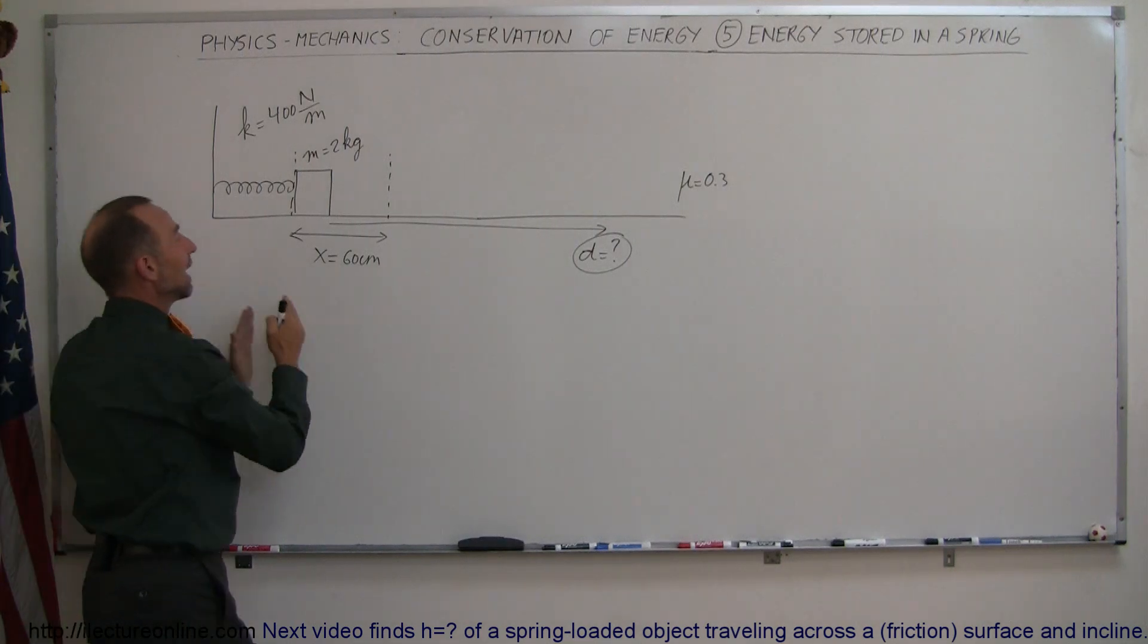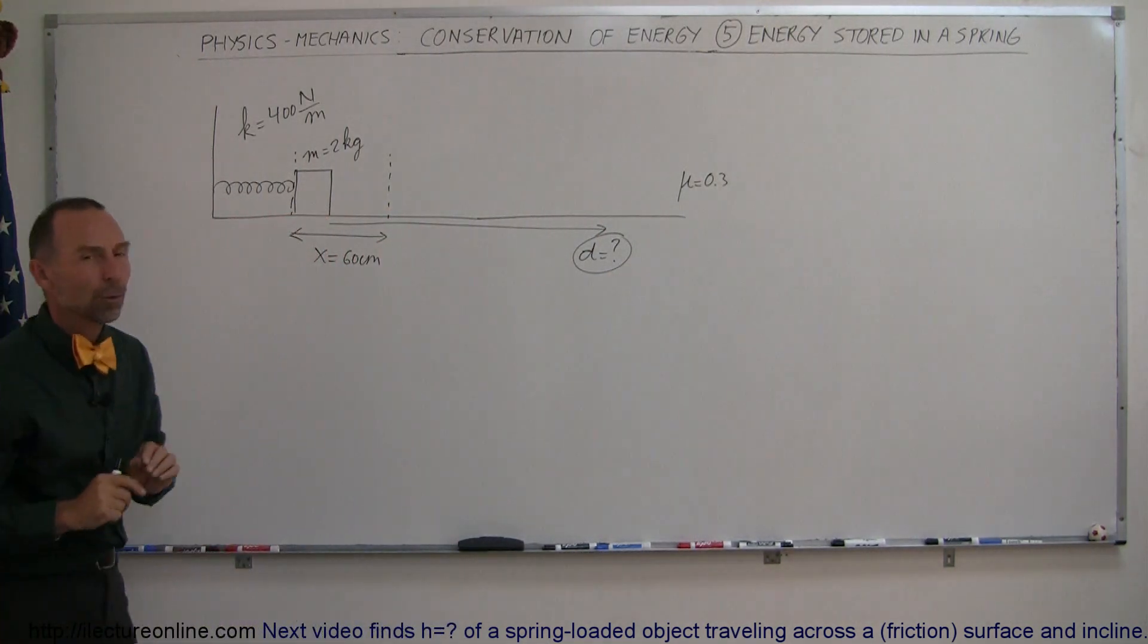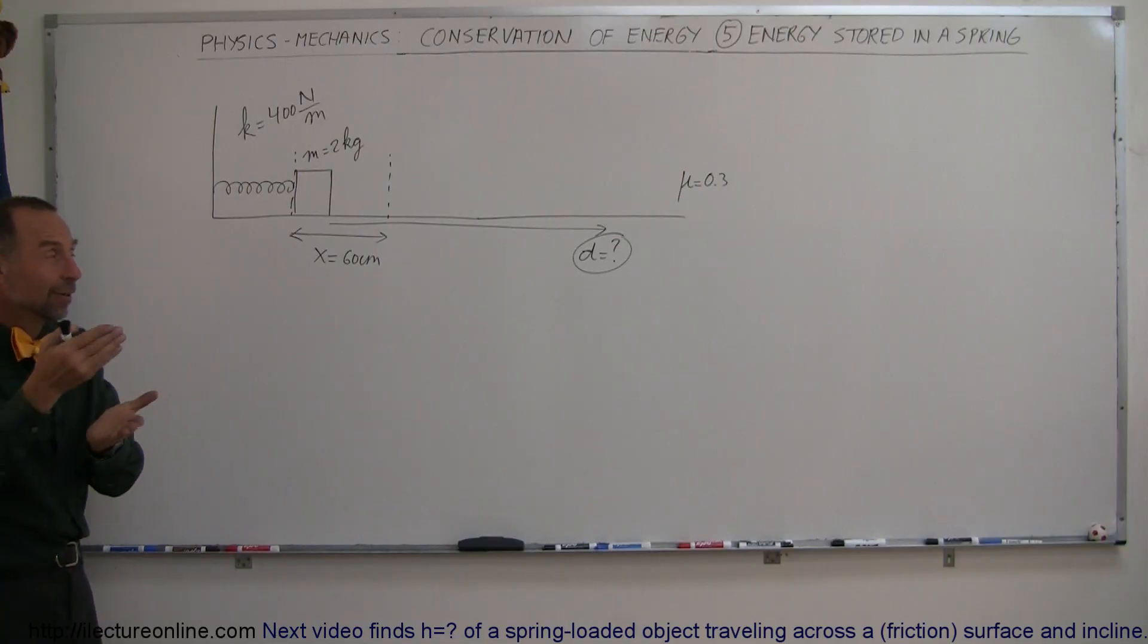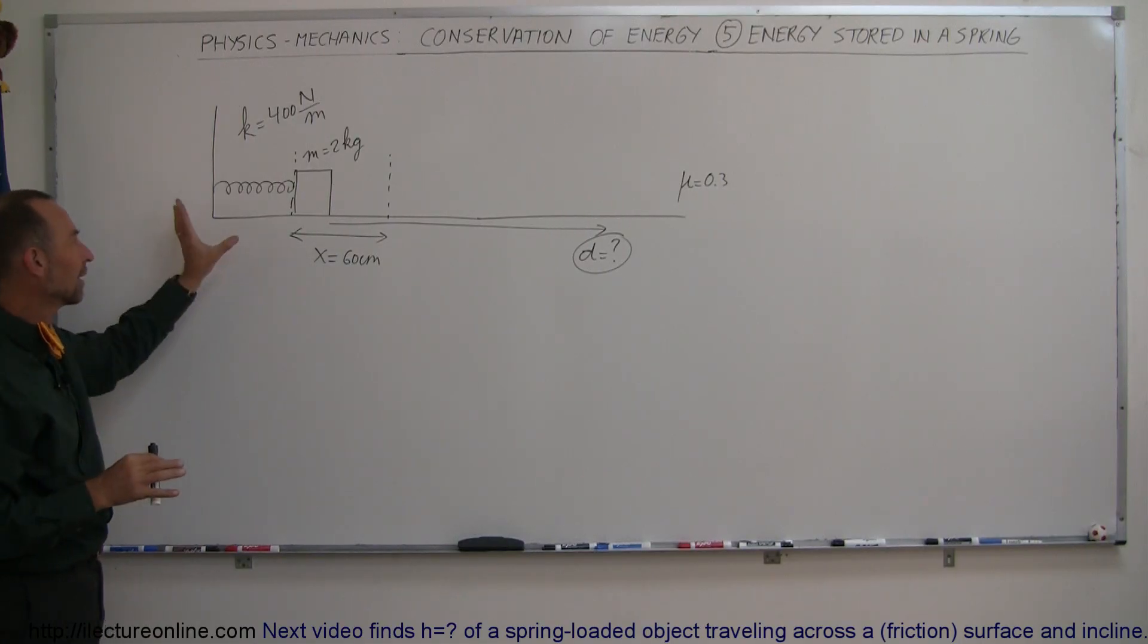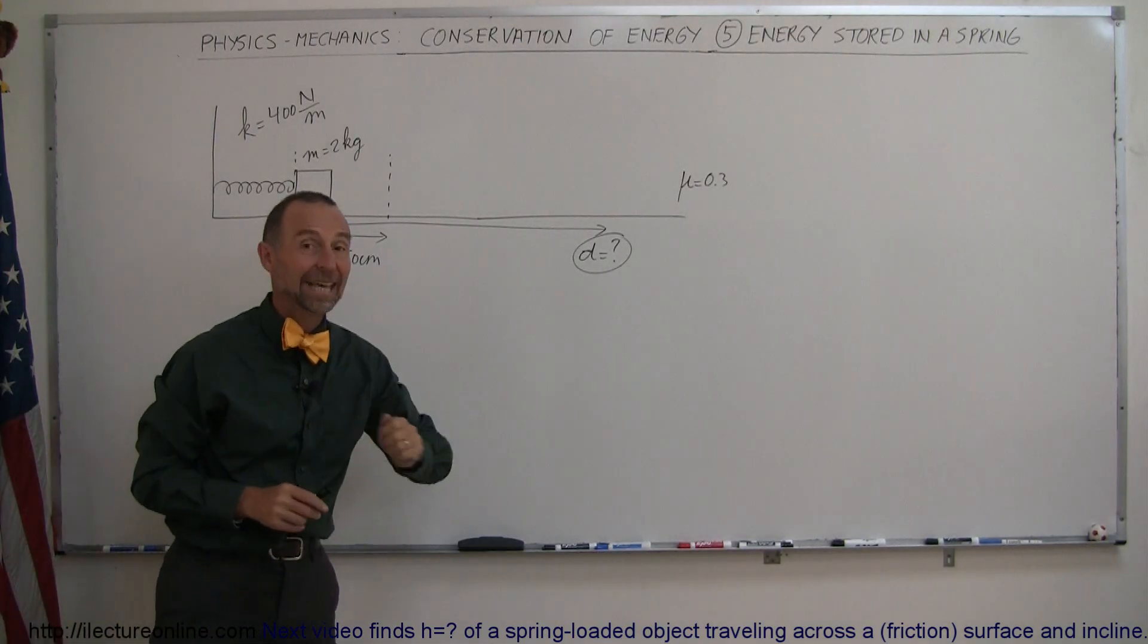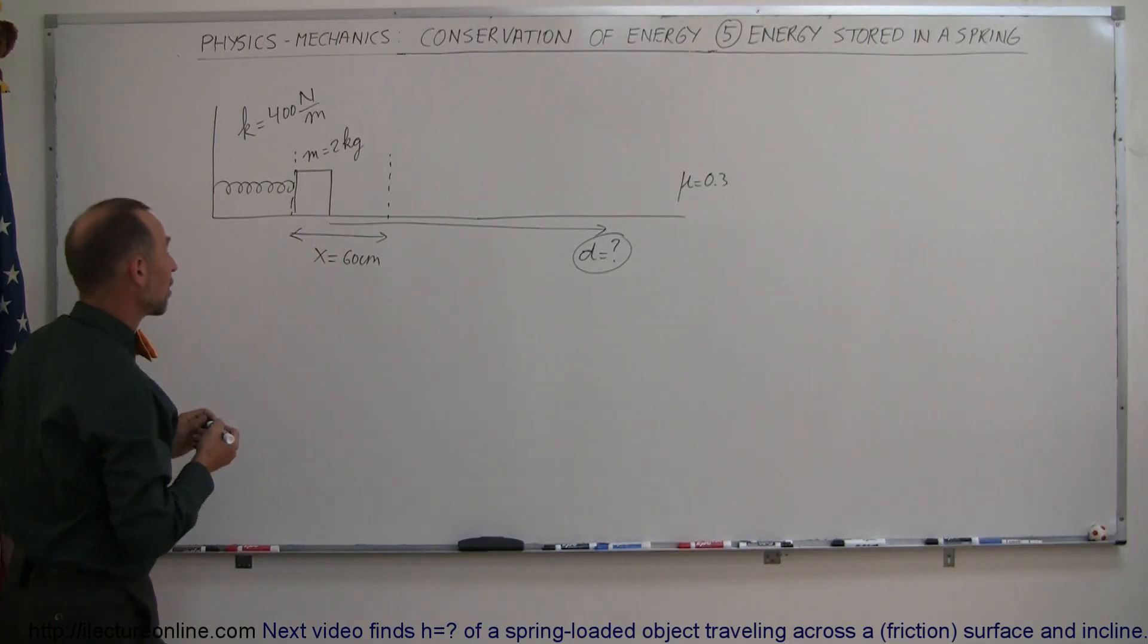But we really, just like with a roller coaster, don't care what happens in between. We only care about the initial state and the final state. What goes on in between is not important, except of course the work being done to overcome friction—we do take that into account. We can simply look at the initial state and final state and get the correct answer.